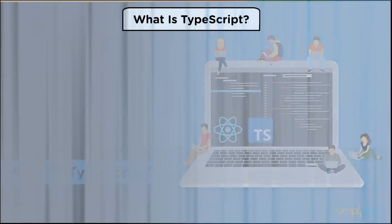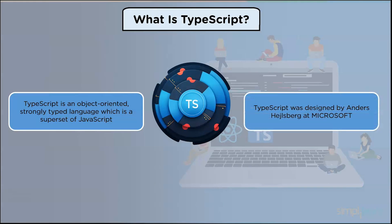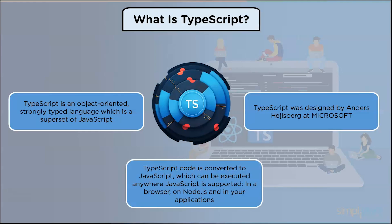TypeScript is an object-oriented and strongly typed programming language which is a superset of JavaScript. TypeScript was designed by Anders Hejlsberg at Microsoft. The limitations of JavaScript for developing large-scale applications led to the creation of TypeScript. TypeScript code is converted to JavaScript, which can be executed anywhere JavaScript is supported — in a browser, on Node.js, or in any other application.